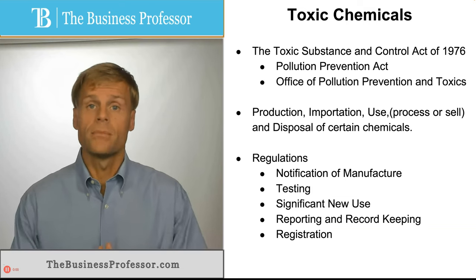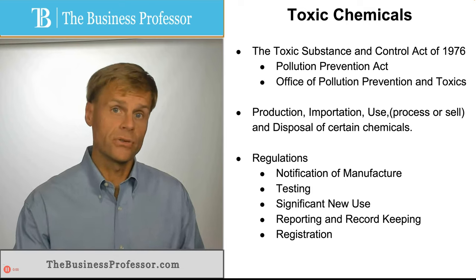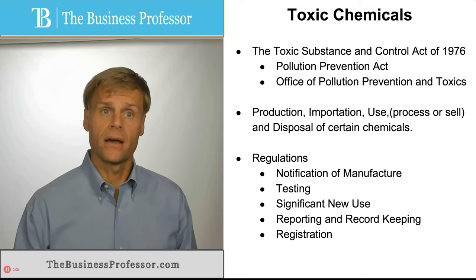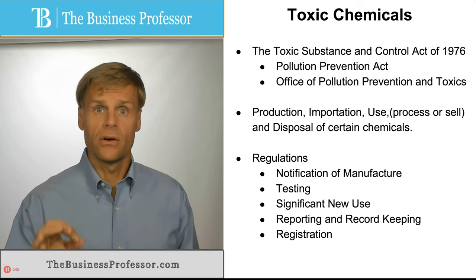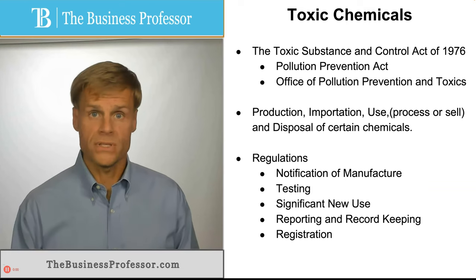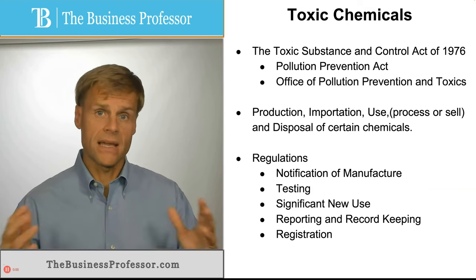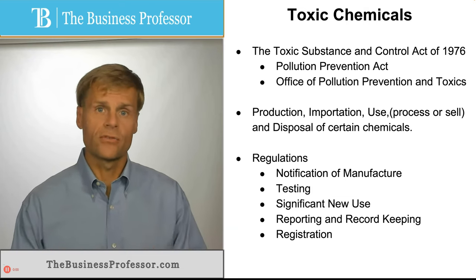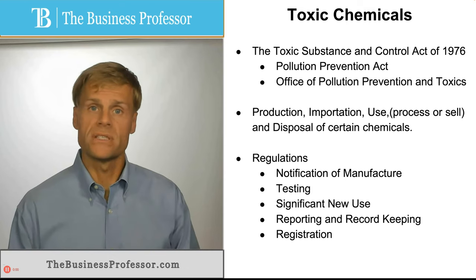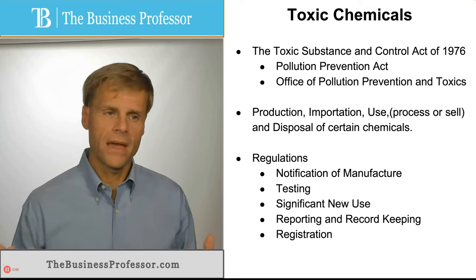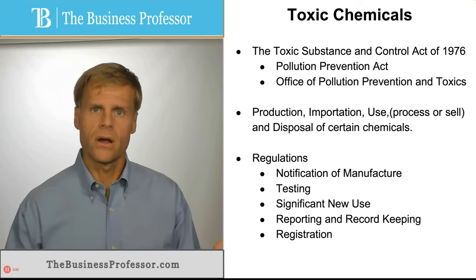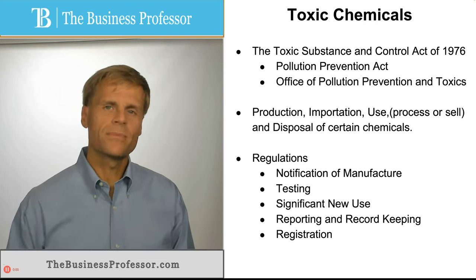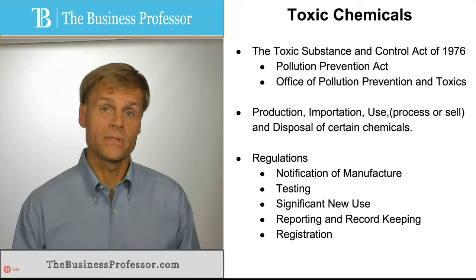Registration: before one of these products can be introduced to the market, it must be registered with the administrative agency. There must be a permit or certificate of approval for commercial sale. Once this process is done, there are ongoing requirements for continued testing, particularly for new uses or commonly understood uses of the product, to make certain nothing arises that could cause an adverse impact to human beings or the environment. This is the primary regulatory regime for toxic chemicals in the U.S. system.